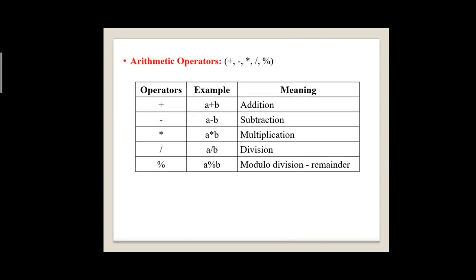Let us discuss one by one. First, arithmetic operators: plus, minus, star, divide, modulo. These operators are used to perform arithmetical operations. Taking two variables A and B and applying arithmetic operators: A plus B means addition, minus means subtraction, then division, modulo, and modulo division.